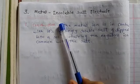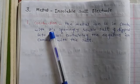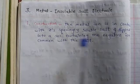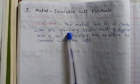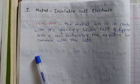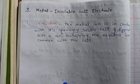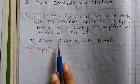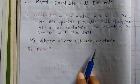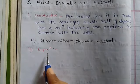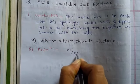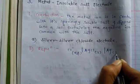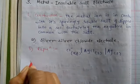The third type is the metal insoluble salt electrode. In its construction, a metal ion is in contact with its sparingly soluble salt, dipped into a solution containing the negative ion common with the salt. There are two types: the silver-silver chloride electrode and the calomel electrode. The representation of the silver-silver chloride electrode is: Cl⁻ (aq) | AgCl (solid) | Ag (solid).